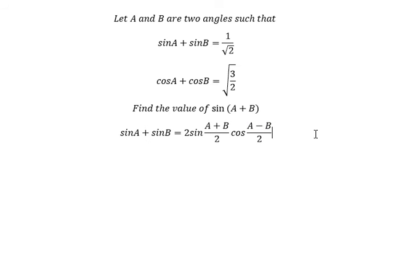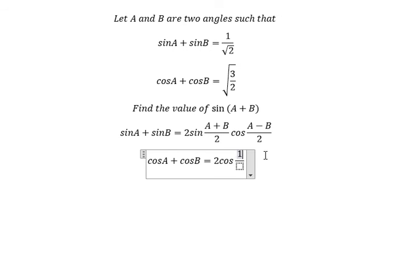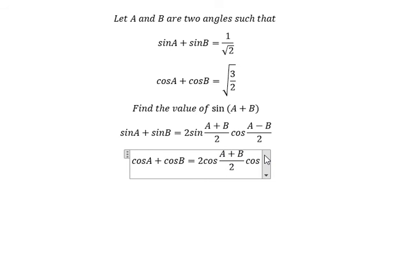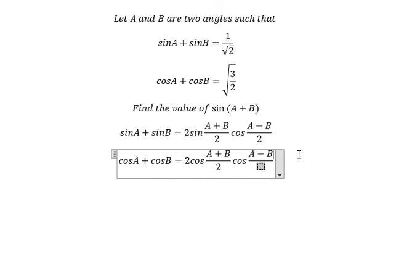The next formula: cosine A plus cosine B equals 2 times cosine of (A plus B) over 2, times cosine of (A minus B) over 2.